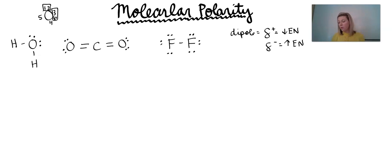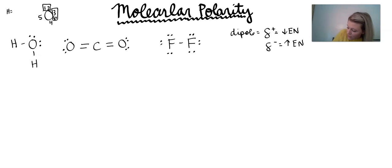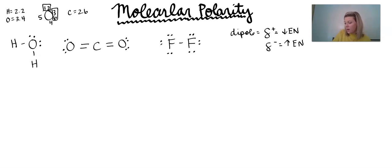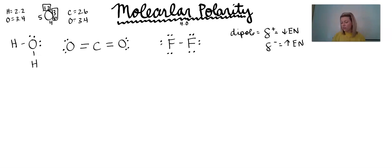I want to go through and label my dipoles on each of these atoms. From reference table S: H has an electronegativity of 2.2, O has an electronegativity of 3.4, C has an electronegativity of 2.6, and F has an electronegativity of 4.0. Our higher electronegativity is assigned the partial negative, and our lower electronegativity is the partial positive.